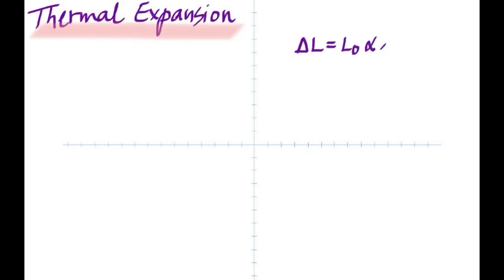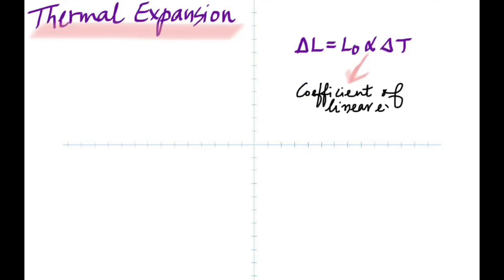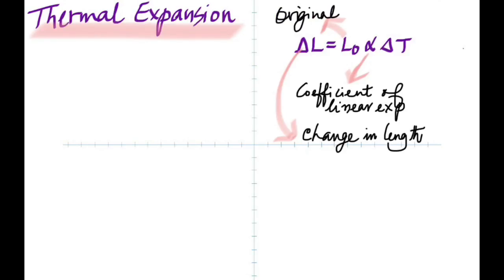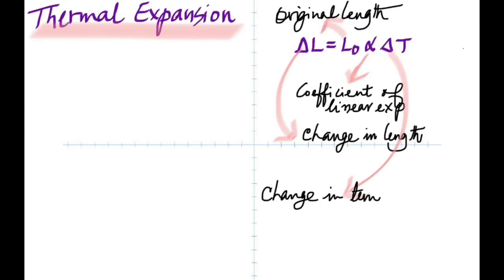When you put all three together, the formula is: change in length equals alpha times L-naught times delta T. Alpha is called linear expansivity or the coefficient of linear expansion. L-naught is the original length, and delta T is the change in temperature.